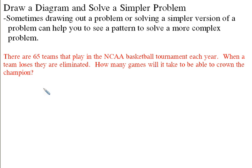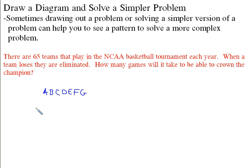Let's say there are the following teams: A, B, C, D, E, F, and G — so only seven teams, as a way of solving a simpler problem. Let's go ahead and say A plays B, C plays D, E plays F, and G does not play that round.